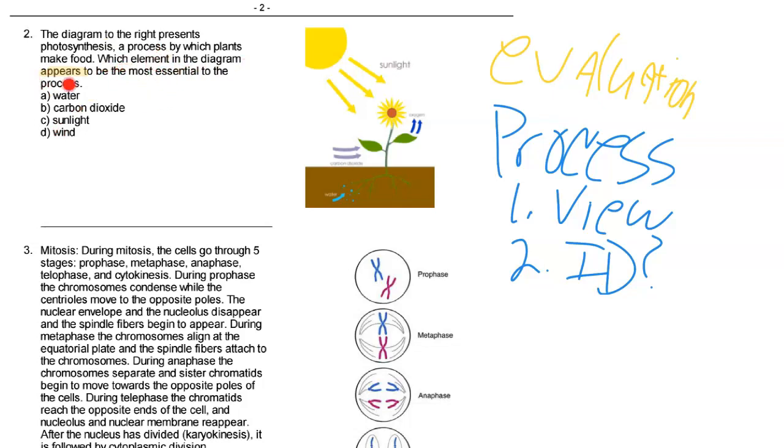Here's the question: which element in the diagram appears to be the most essential? It doesn't say which element is the most essential, it doesn't say which should be the most essential - it says appears. So this is calling upon that skill of evaluation.